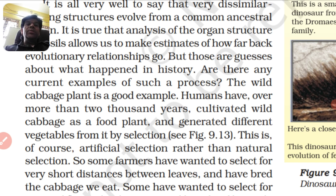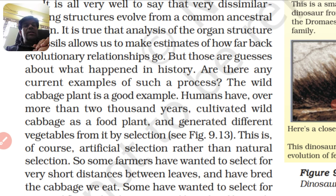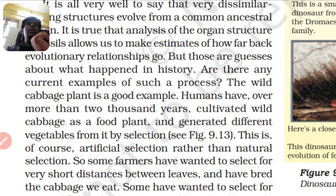The wild cabbage plant is a good example. Humans have, over more than 2000 years, cultivated wild cabbage as a food plant and generated different vegetables from it by selection. The wild cabbage plant is a good example of this. And this is of course artificial selection rather than natural selection.